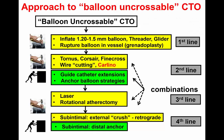The lessons from this case: first, having an algorithm for approaching balloon uncrossable lesions is important. The algorithm starts with small balloons, then escalates to different microcatheters and strategies to improve guide catheter support. The third line is using laser or rotational atherectomy if the crossing wire can be exchanged. The fourth line, used in this case, is crossing through the subintimal space — via antegrade dissection re-entry using the Carlino technique and Stingray re-entry — leading to successful stenting and good stent expansion. Thank you very much.